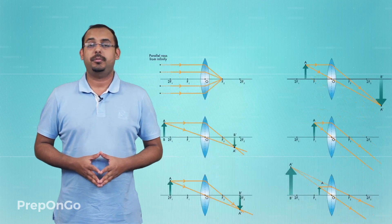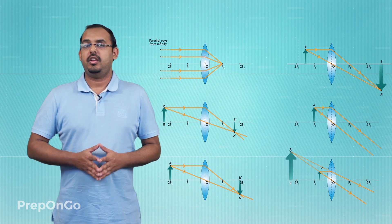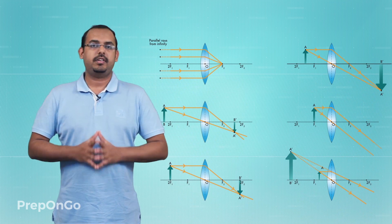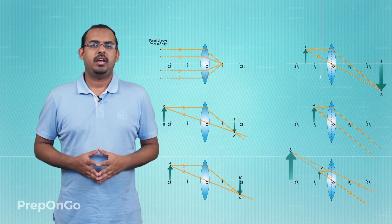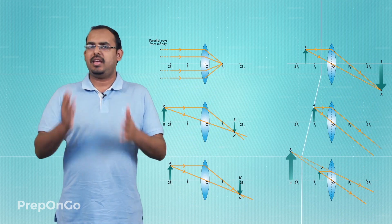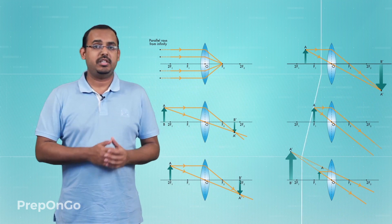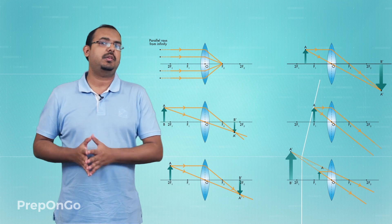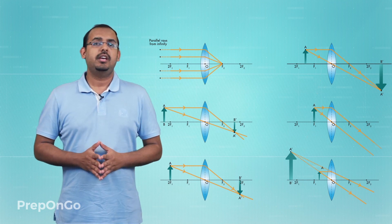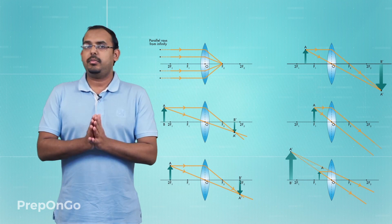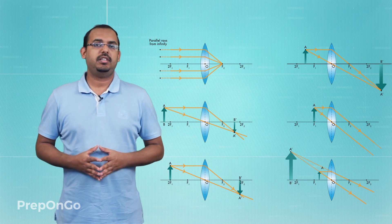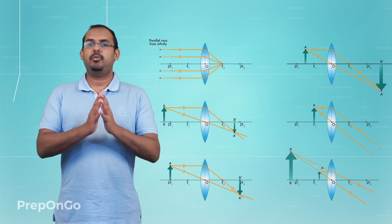Hello everyone. In our last lecture we went through the various cases of image formation with the help of a convex lens. Now we'll apply the same concepts and use the same basic principles to study about the image formation cases with the help of a concave lens.